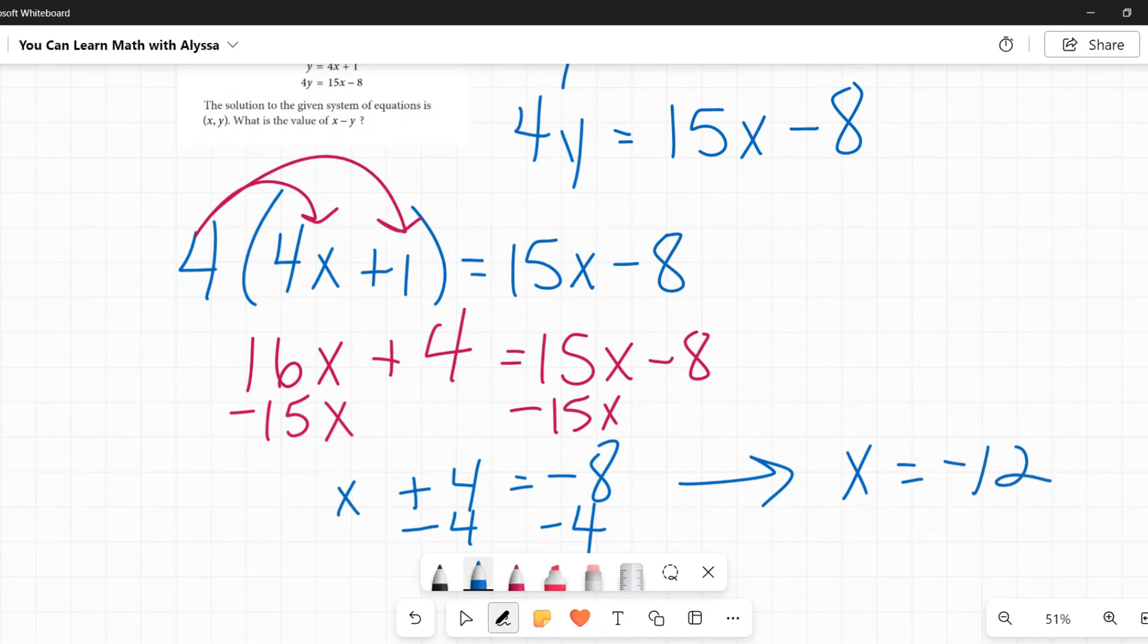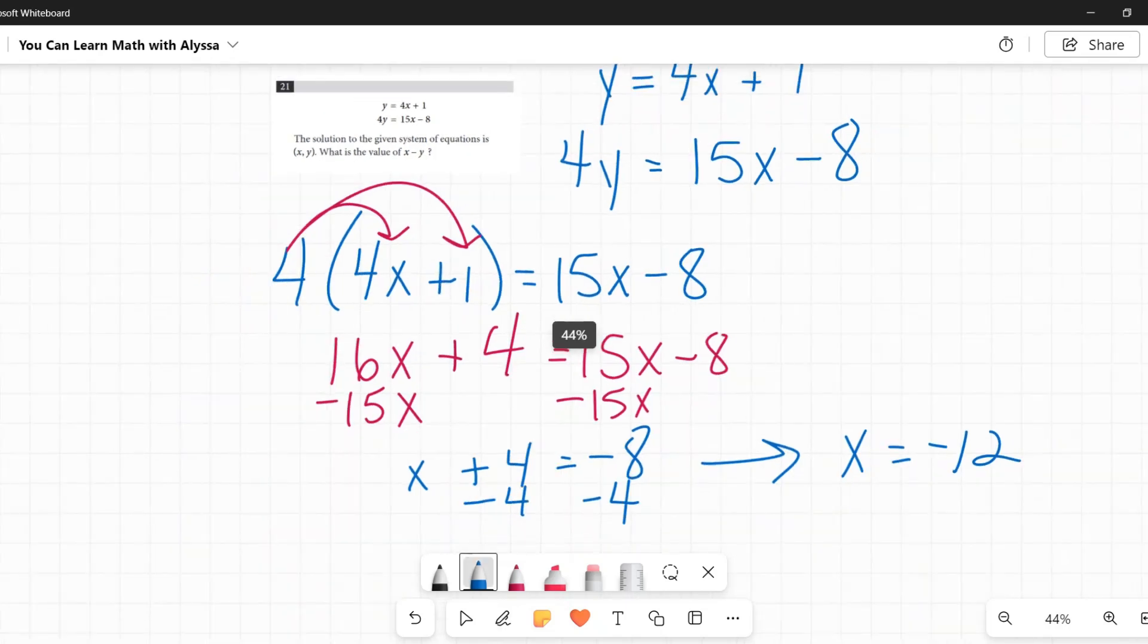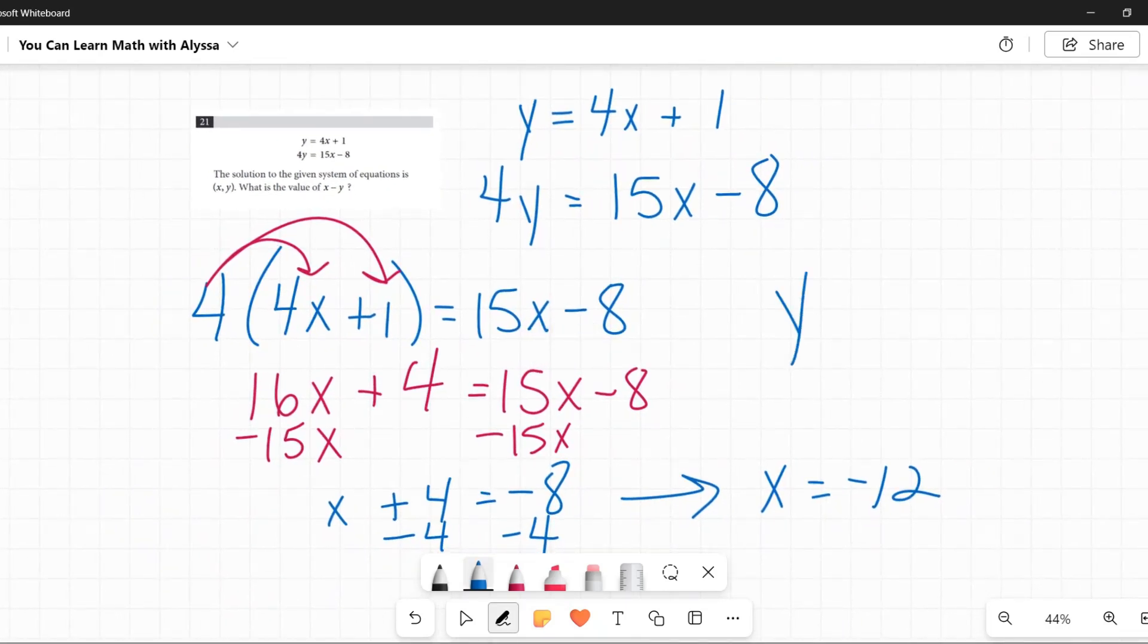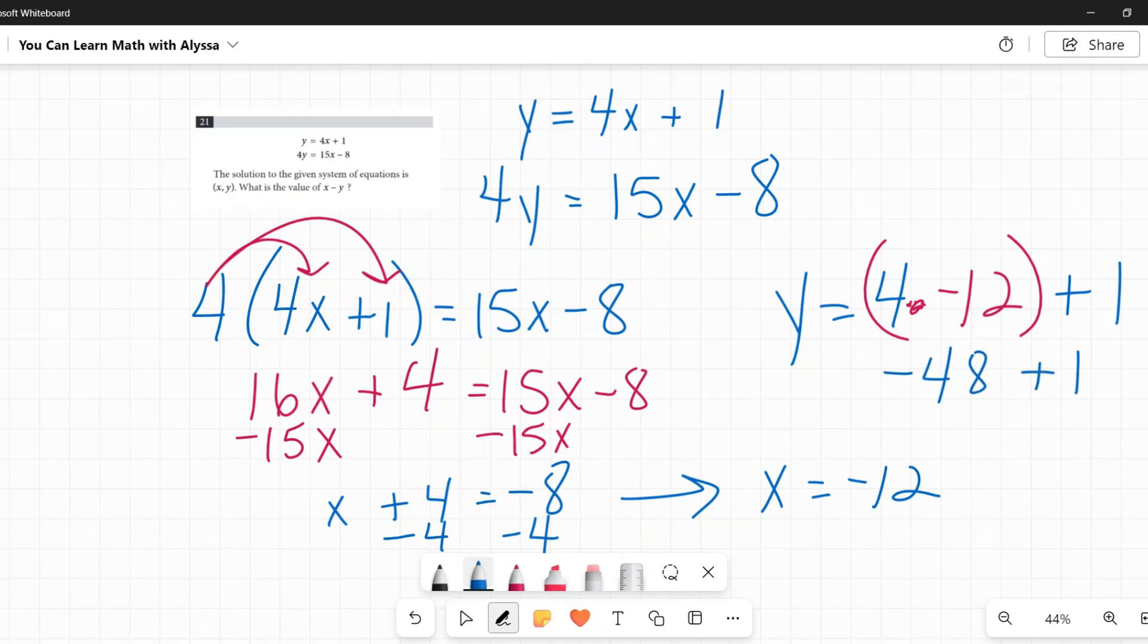So x is negative 12. And then to solve for my y, and that y equals 4x plus 1, I'm going to replace that x with my new negative 12, and I really cramped that in there. So I'm going to make it a little more 4 times negative 12, plus 1. 4 times negative 12 is negative 48, plus 1 is negative 47.